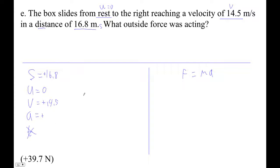We don't care about T, so we use V squared is U squared plus 2AS.